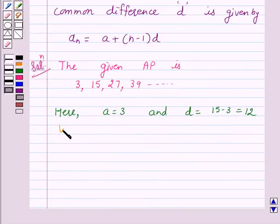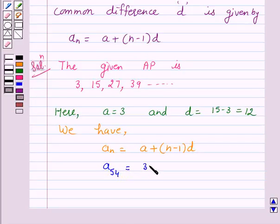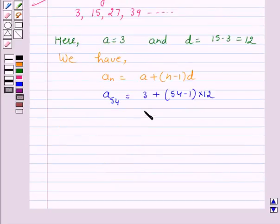Now, according to our key idea, we have AN equals A plus (N minus 1) into D. So A54 equals 3 plus (54 minus 1) into 12, and this is again equal to 3 plus 53 into 12.